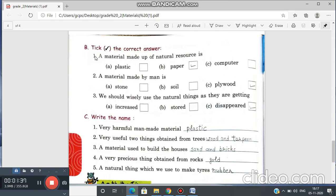Now exercise number B. Tick the correct answer. A material made up of natural resource is plastic, paper or computer. Which one is right? Yes. Paper.